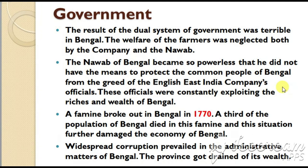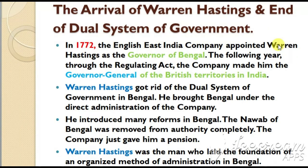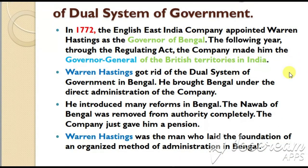Widespread corruption prevailed in the administrative matters of Bengal, and the province got drained of its wealth. In the year 1772, the English East India Company appointed Warren Hastings as the governor of Bengal. The following year, through the Regulating Act, the company made him the governor general of the British territories in India. Warren Hastings got rid of the dual system of government and brought Bengal under the direct administration of the company. He introduced many reforms, the Nawab was removed from authority completely and given only a pension, and Hastings laid the foundation of an organized method of administration in Bengal.